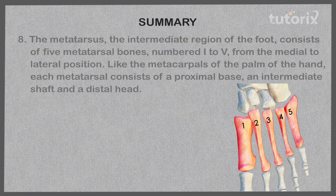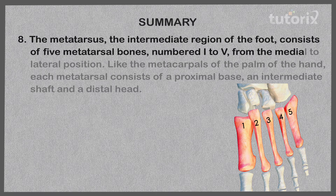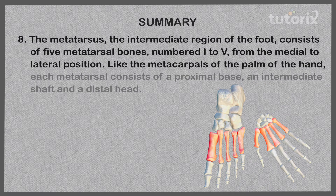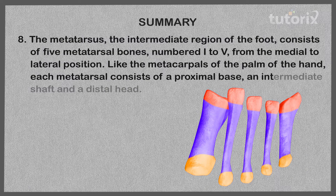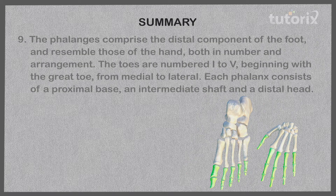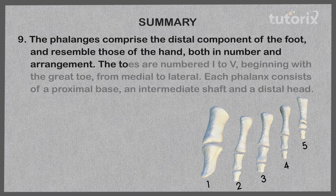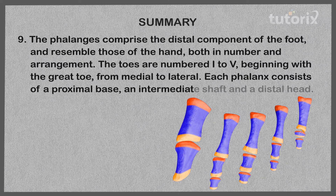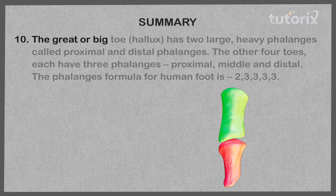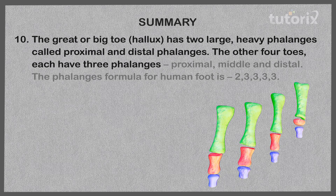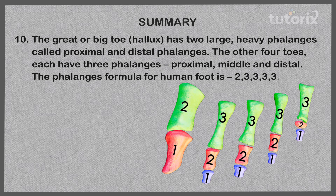The tarsus, or ankle, is the proximal region of the foot and consists of seven tarsal bones. The metatarsus, the intermediate region of the foot, consists of five metatarsal bones numbered one to five from medial to lateral; like the metacarpals of the hand, each metatarsal has a proximal base, intermediate shaft, and distal head. The phalanges comprise the distal component of the foot; the great toe has two phalanges (proximal and distal), while the other four toes each have three (proximal, middle, and distal), giving a formula of 2-3-3-3-3 for a total of 14 phalanges.